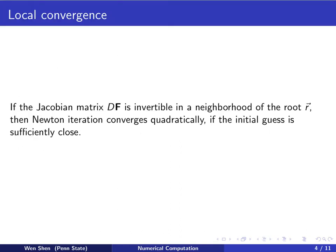For the Newton iteration for systems, we have the following local convergence result under some assumptions. It says that if the Jacobian matrix DF is invertible in a neighborhood of the root R, then the Newton iteration converges quadratically if the initial guess is very good, that is sufficiently close to the root.